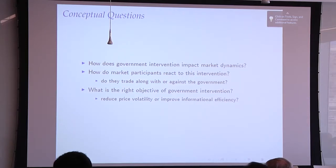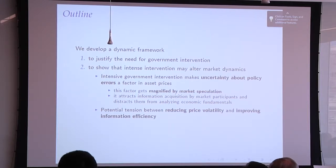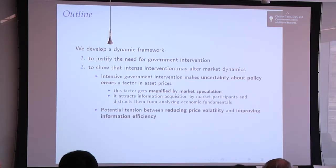What is the right objective for government intervention? Should we reduce price volatility or improve price efficiency? It's a dynamic framework. First, we want to provide some justification for government active intervention in the financial market — unusual because the US government rarely intervenes. In China the government does a lot. Second, intense intervention can alter market dynamics: active and intensive intervention means uncertainty about policy error becomes a pricing factor in the financial system.